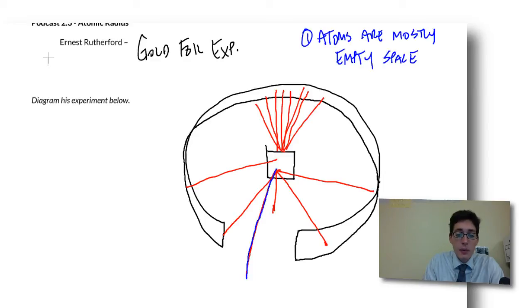But if this proton beam, this original beam, is able to go straight through, that means that there's nothing in the way. So that explained one half of it. The other half, how do we explain these beams that bounced off clean the other way?